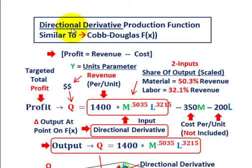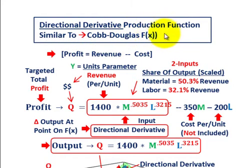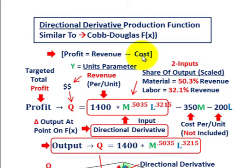What we're going to be going over here is what they refer to as a directional derivative, and we'll look at it in terms of the production function. It's going to be similar to the Cobb-Douglas production function. For our production function, we're going to have profit equal to some revenue minus some cost. Profit or output Q here would be in dollars.